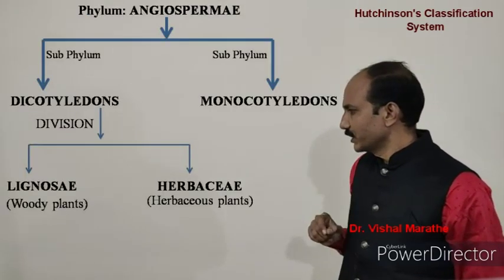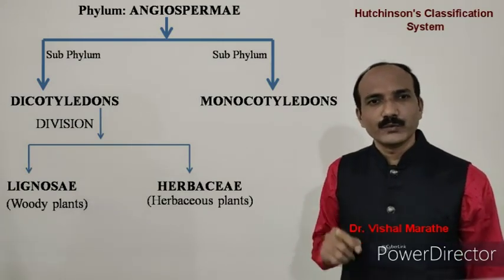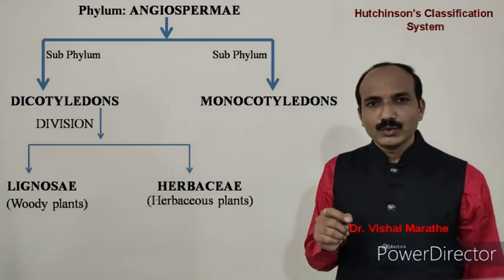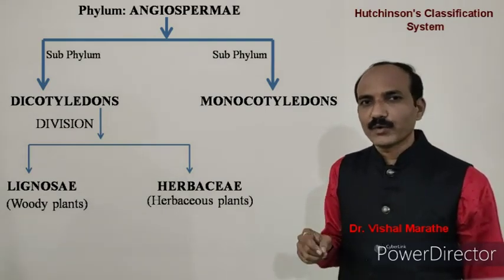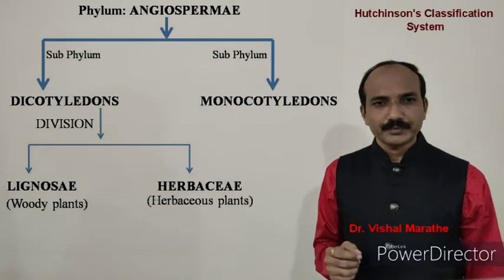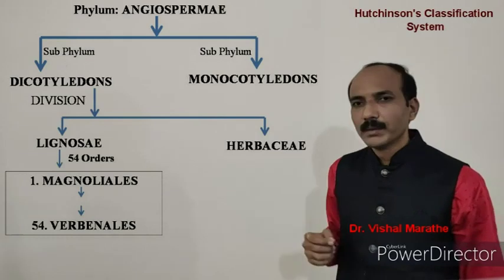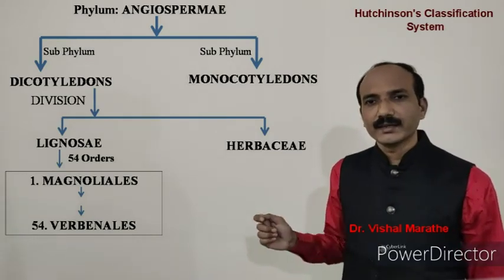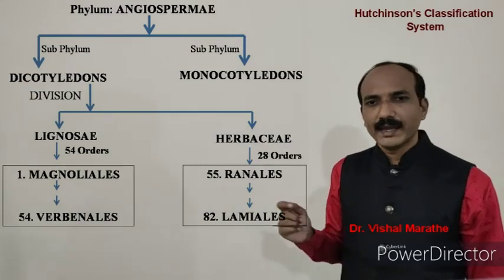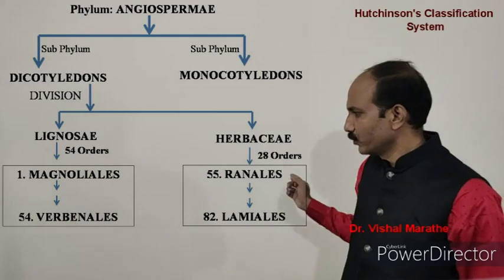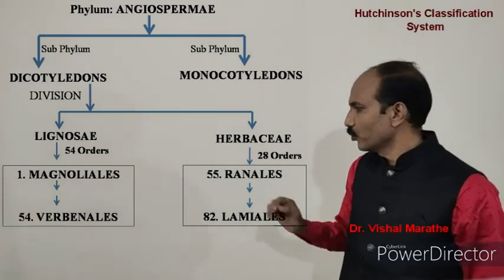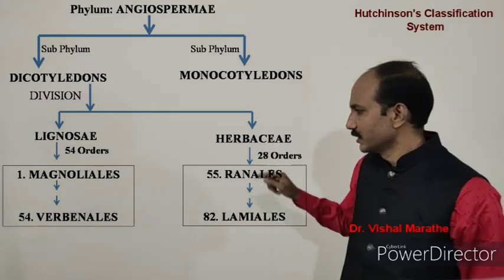In the classification of Dicotyledonae, dicots were further divided into two divisions: Lignosi, which includes woody plants, and Herbaceae, which includes herbaceous plants. Lignosi includes woody representatives derived from Magnoliales, and Herbaceae includes predominantly herbaceous families derived from Ranales. The division Lignosi was further divided into 54 orders, beginning with Magnoliales and ending in Verbenales, whereas the division Herbaceae was divided into 28 orders, beginning with Ranales and ending in Lamiales.